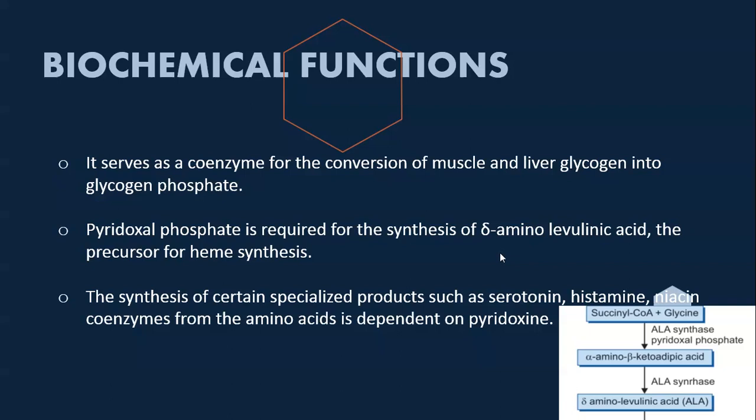If you recollect the video on hemoglobin synthesis, I showed a flowchart where succinyl-CoA and glycine, in the presence of ALA synthase, get converted into alpha-amino-beta-keto adipic acid, and then into delta-aminolevulinic acid. Pyridoxal phosphate (PLP) is required for the synthesis of delta-aminolevulinic acid, which is needed as a precursor for heme synthesis.